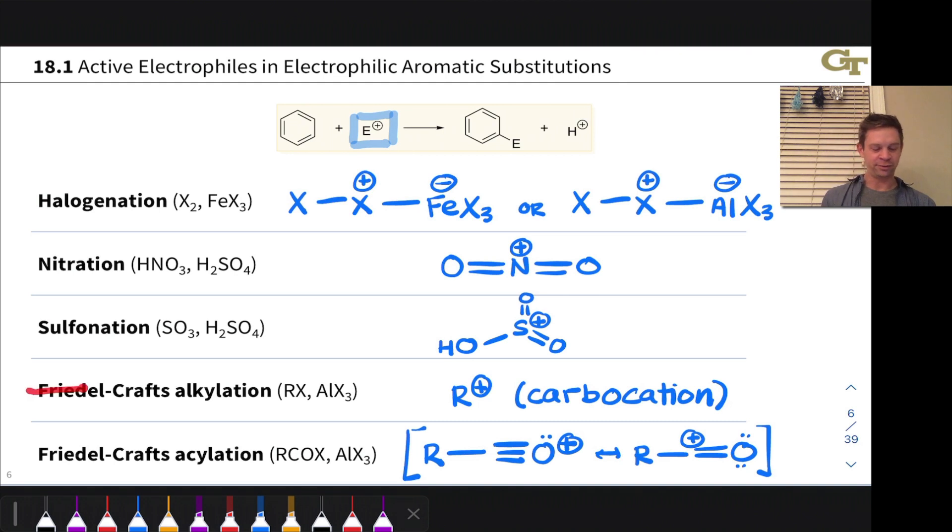Friedel-Crafts alkylation is very rarely used in practice. Because, as we'll see very shortly, acylation followed by reduction of the carbonyl group that shows up in the product of Friedel-Crafts acylation is a much better route to alkyl substituted benzenes in many, many cases.